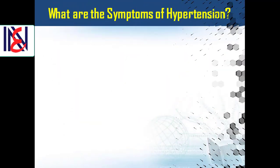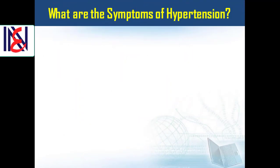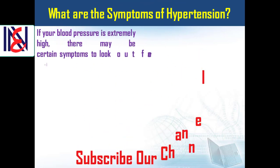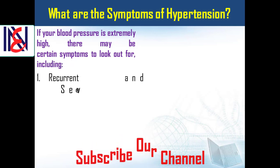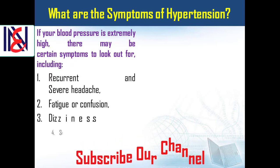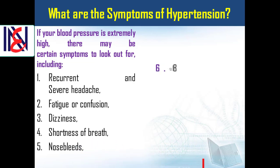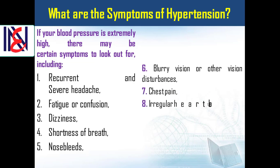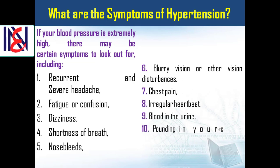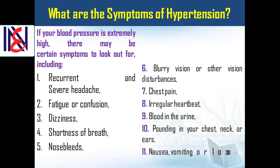What are the symptoms of hypertension? If your blood pressure is extremely high, there may be certain symptoms to look out for, including the following: recurrent and severe headache; fatigue or confusion; dizziness; shortness of breath; nosebleeds; blurry vision or other vision disturbances; chest pain; irregular heartbeat; blood in the urine; pounding in your chest, neck or ears; and nausea, vomiting, or loss of appetite.